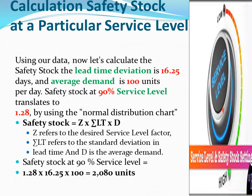This normal distribution chart shows the service factors corresponding to service levels, helping to find the values of Z at different service levels. After calculating the service factor and lead time standard deviation, let's now calculate the safety stock at a 90% service level, where the lead time standard deviation is 16.25 days and average demand is 100 units per day. At 90% service level, Z equals 1.28. Safety stock equals Z multiplied by σ_LT multiplied by D: 1.28 × 16.25 × 100 equals 2,080 units. This means that by having 2,080 units as safety stock, there is a 90% probability that we can satisfy our customers' orders.